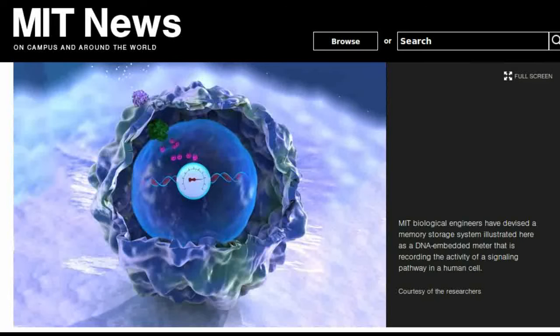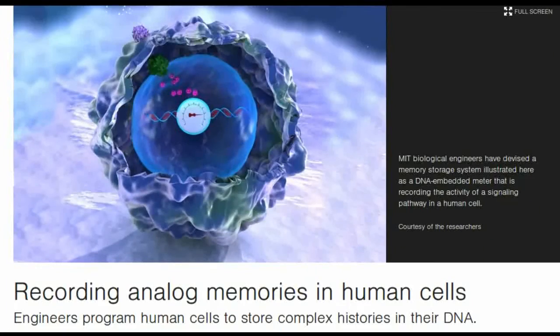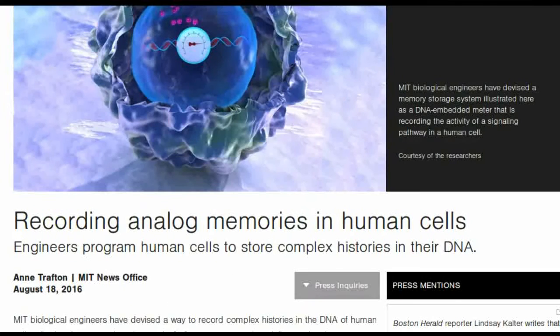In bacteria where CRISPR originally evolved, the system records viral infections so that cells can recognize and fight off invading viruses. When using CRISPR to edit genes, researchers create RNA guide strands that match a target sequence in the host organism's genome.